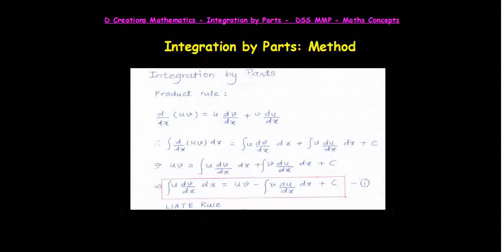There is something called a LIATE rule. Each one of them represents a certain kind of a function. For example, L is for logarithmic, I is for inverse trigonometric, A is for algebraic, T is for trigonometric, E is for exponential.